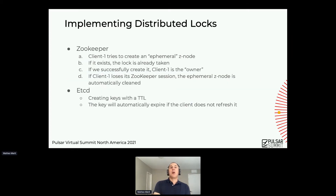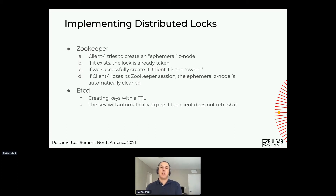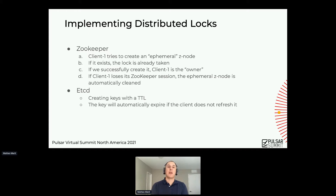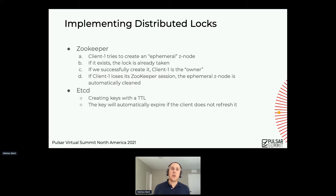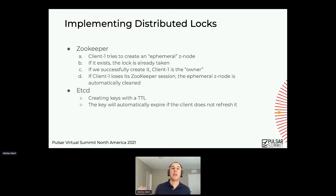How do you do distributed locks with ZooKeeper? If you are a client, you try to create an ephemeral Z node. If that Z node exists, it means the lock is already taken, so you fail to acquire the lock. If you are successful and you create that Z node, you know you're the owner. It is an ephemeral Z node because that Z node is tied to the session that the client has with ZooKeeper. So if the ZooKeeper session expires, then every ephemeral node — including this lock — goes away, giving the chance to someone else to reacquire it.